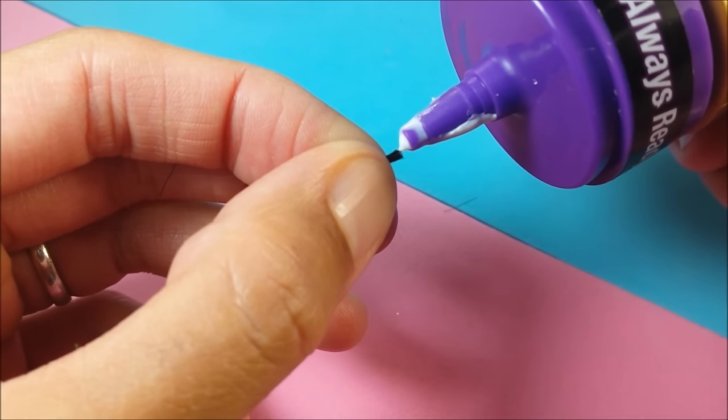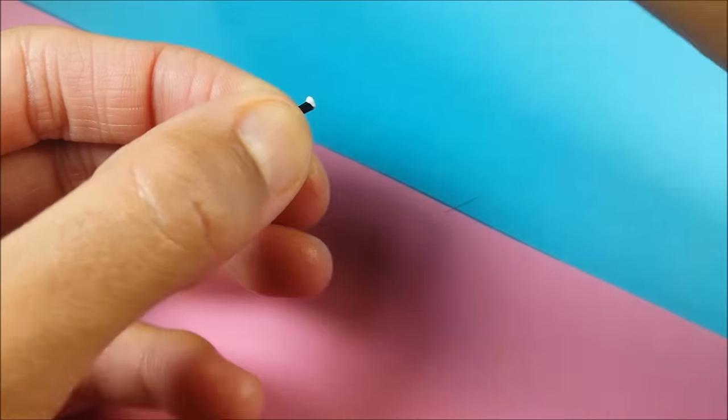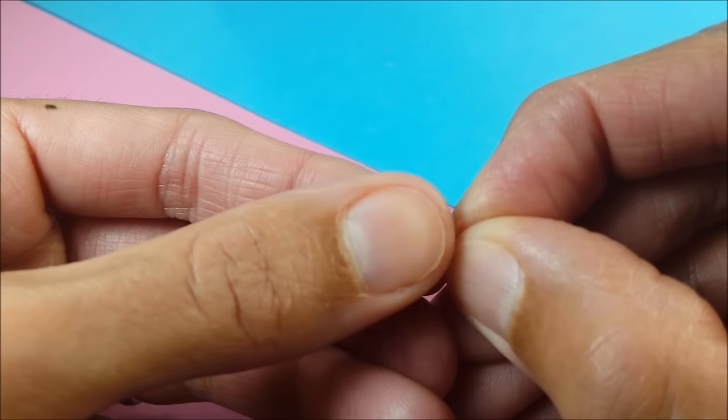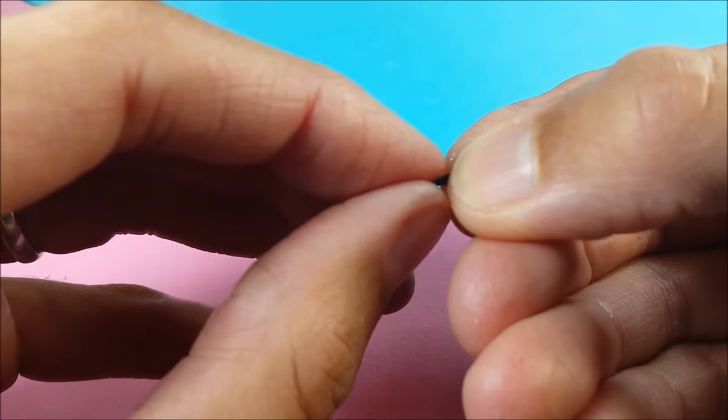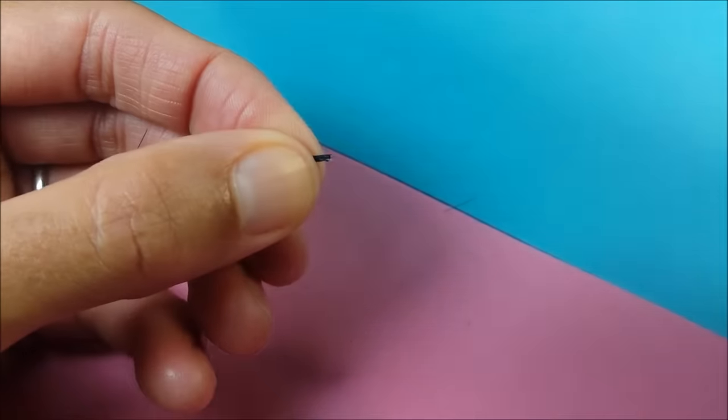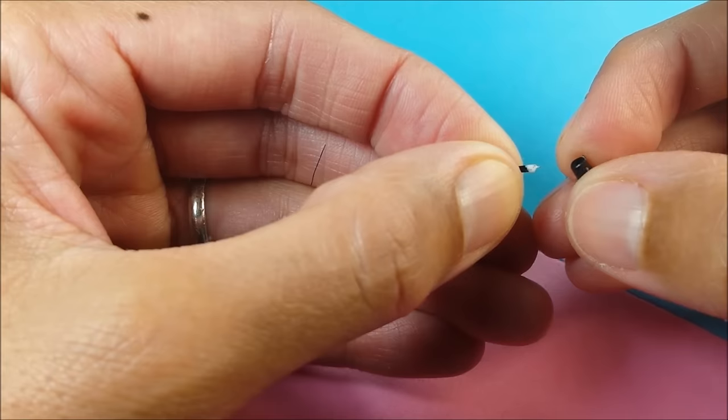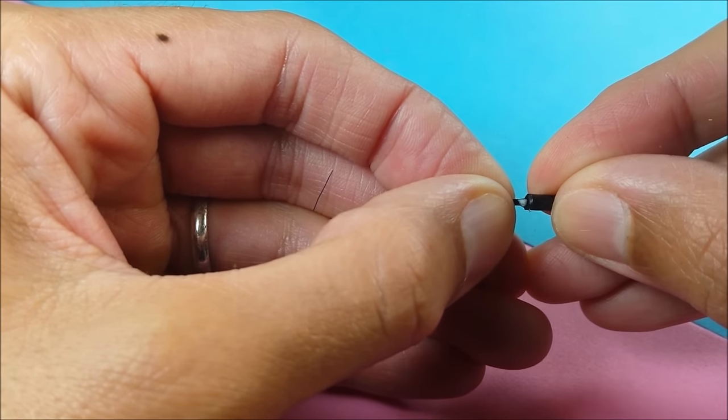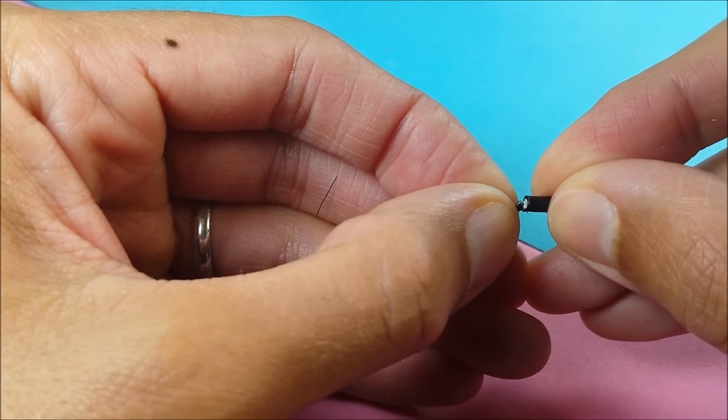And using a bit of glue at the tip to kind of smash it down so that it's narrow enough that it'll fit inside. And I add a bit more glue and glue it inside my little q-tip.